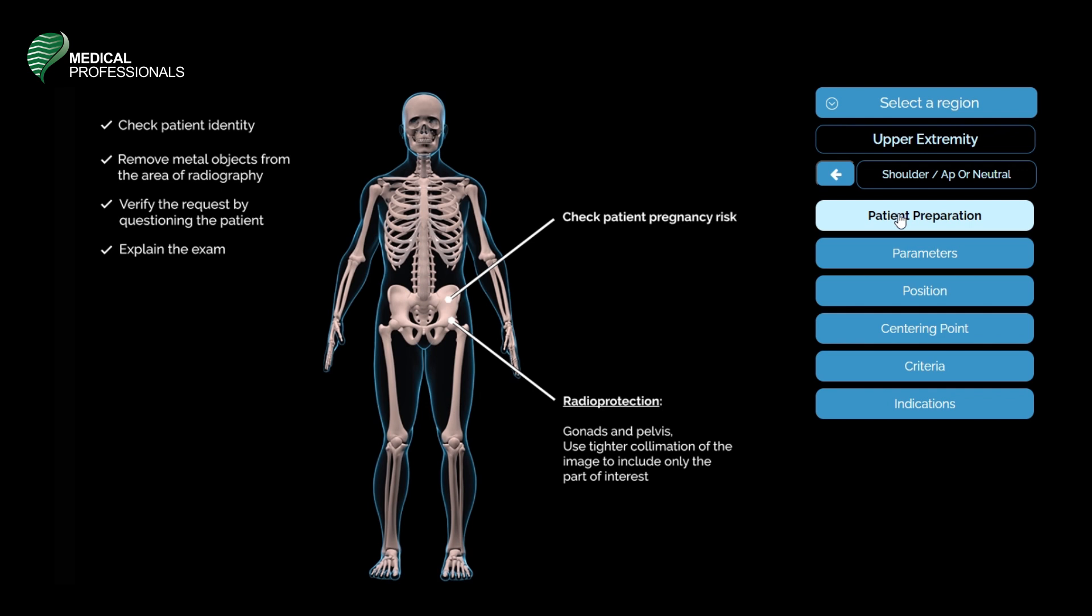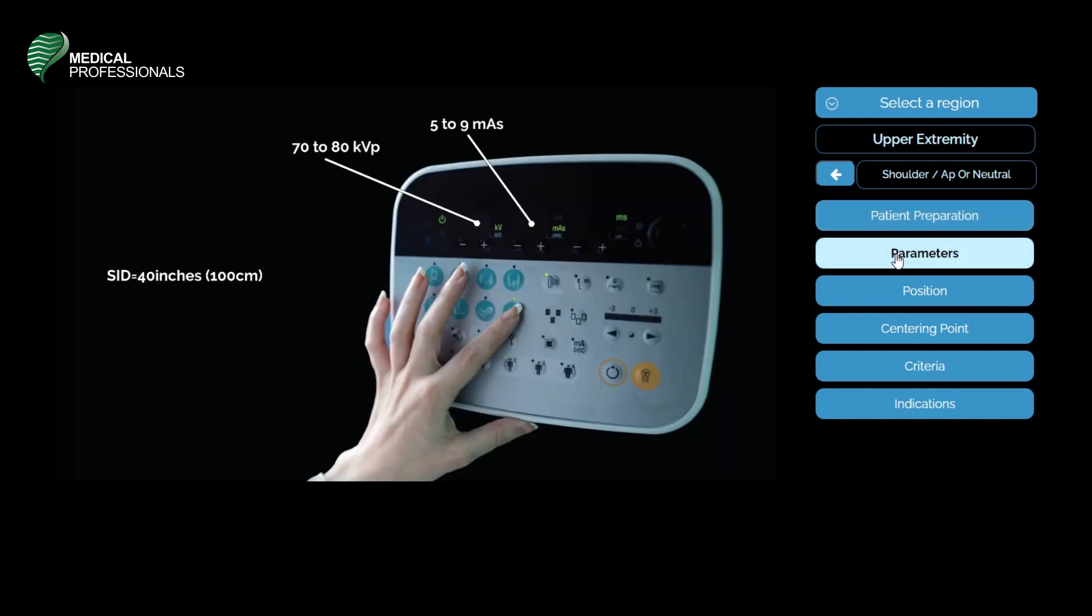You may also use tighter collimation of the image to include only the part of interest. The parameters that you may use in this procedure are the following: 70 to 80 kilovoltage peak, 5 to 9 milliampere seconds.